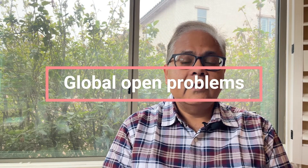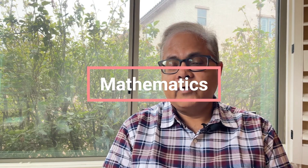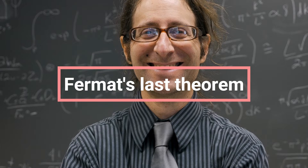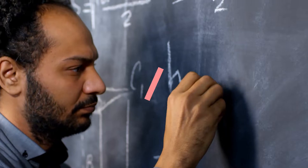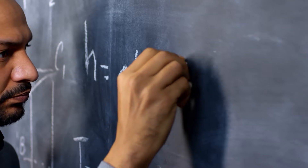The first point is about global open problems. This happens in many fields where a particular problem is very well known to researchers, and this term 'open problem' has largely come from mathematics. There are some problems in mathematics which were out there and have been solved, and some are still pending. For example, you may have heard of Fermat's last theorem, which was there for a long time before it was finally solved by Andrew Wiles. That paper essentially brought out the solution, and now this problem is known to be solved.